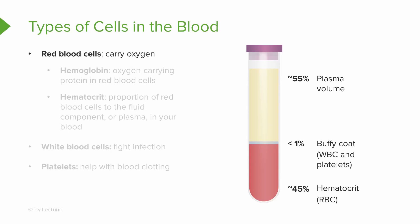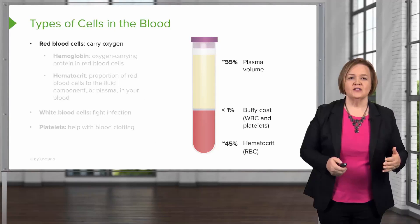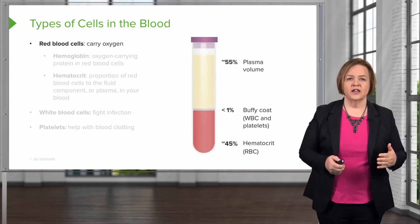That 55% plasma volume can also change with dehydration. Looking at the packed red blood cells — when you hang a unit of blood for a patient, that's what you're hanging, because we want to get that oxygen-carrying component in the red blood cells rather than adding all that extra volume. Now let's go back and take a look at the different types of cells: red cells, white cells, and platelets.